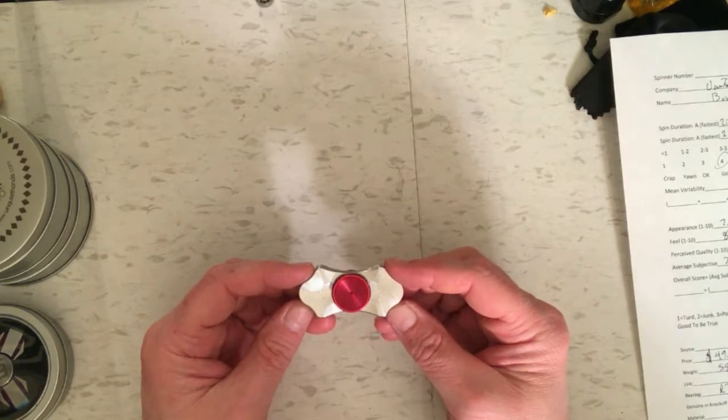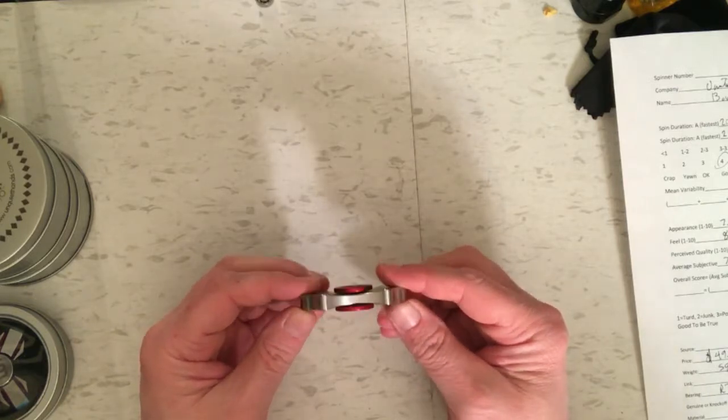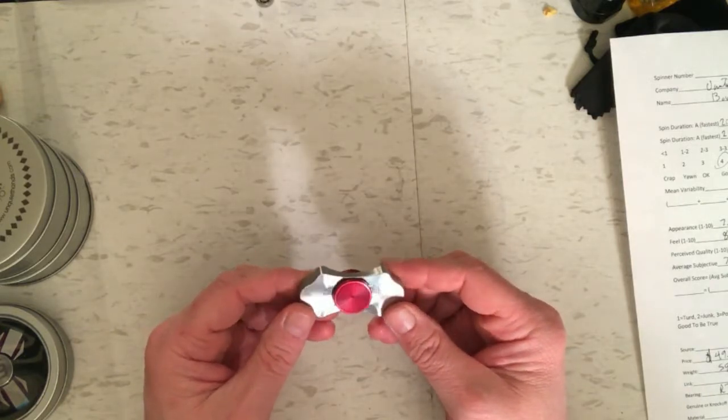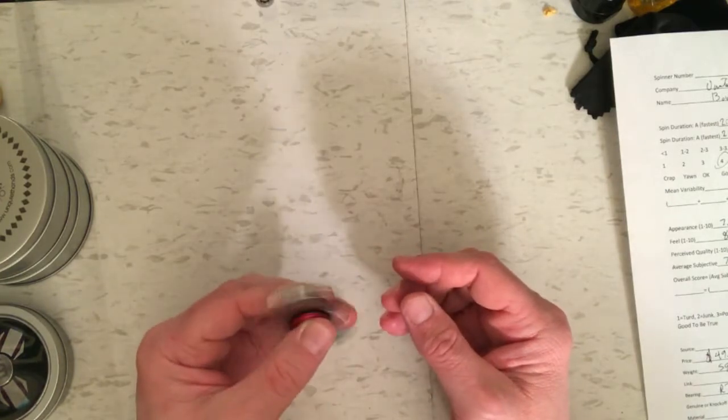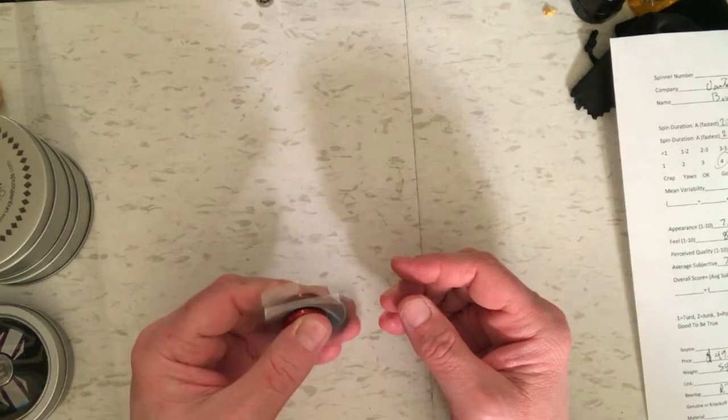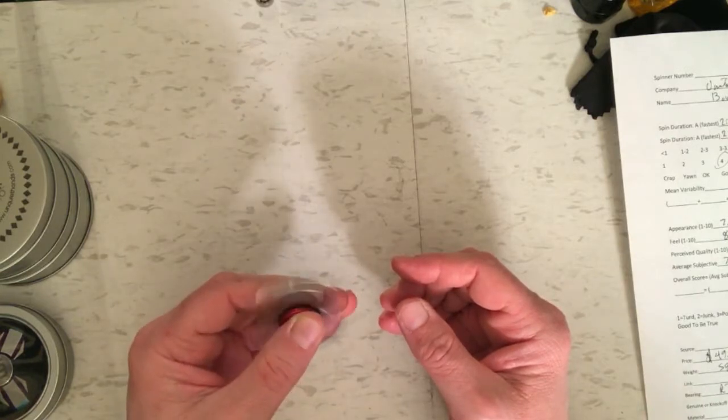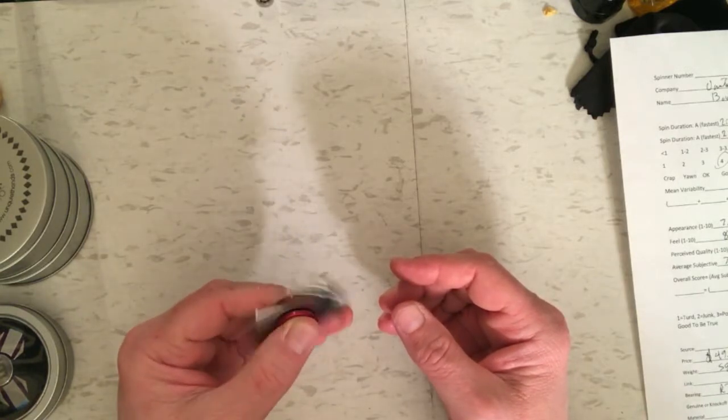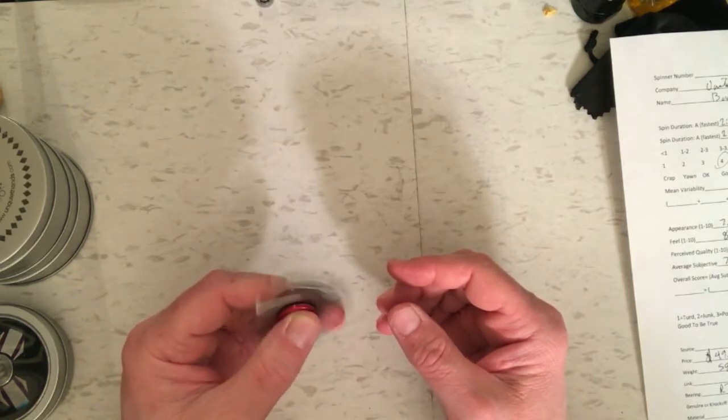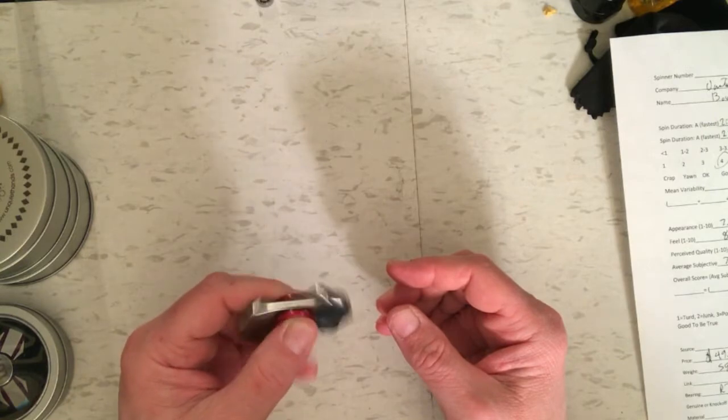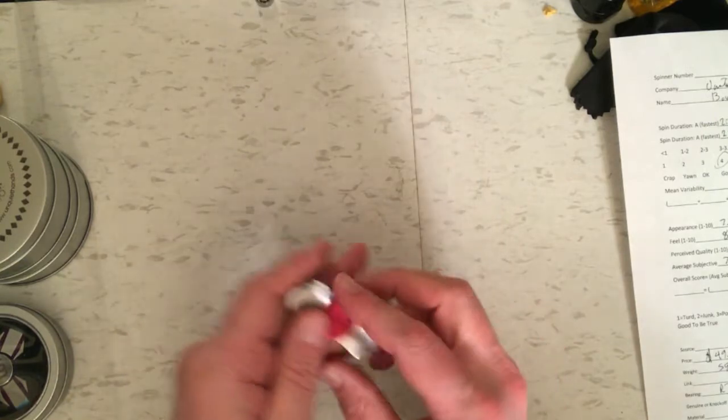And again they're calling it an R3 hybrid ceramic bearing. So I think the takeaway from this is if you're concerned about spin times don't worry about this one. But if you want a little tri-spinner or a little bi-spinner that feels pretty cool this is an okay one to get.